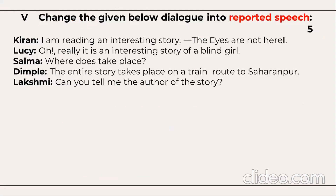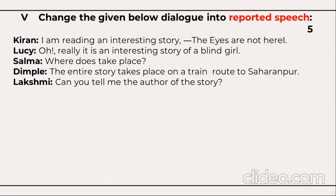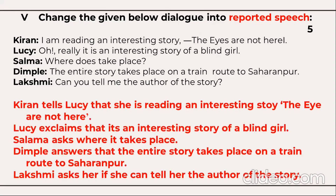Next, you need to report the following dialogue into reported speech. Kiran says: 'I am reading an interesting story.' Lucy says: 'Oh really? It's an interesting story of a blind girl.' Salma asks: 'Where does it take place?' Dimple says: 'The entire story takes place on a train route to Sharampur.' Lakshmi asks: 'Can you tell me the author of the story?' Converted: Kiran tells Lucy that she is reading an interesting story. Lucy exclaims that it's an interesting story of a blind girl. Salma asks where it takes place. Dimple answers that the story takes place on a train route to Sharampur. Lakshmi asks her if she can tell her the author of the story.